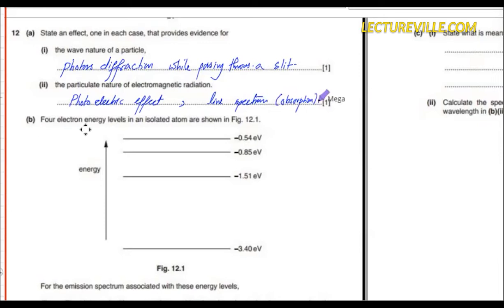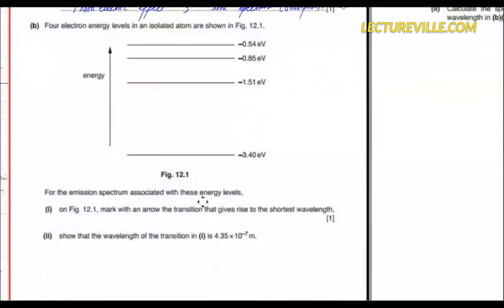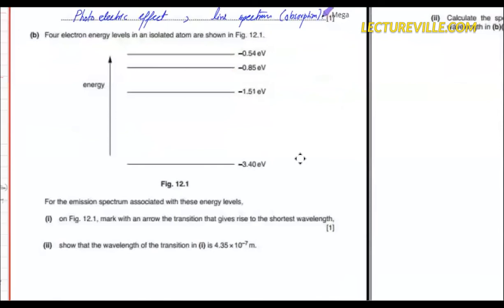Four electron energy levels in an isolated atom are shown. For the emission spectrum associated with these energy levels, mark on the figure an arrow showing the transition that gives rise to the shortest wavelength. Shortest wavelength corresponds to the largest energy transition, so this will be the largest energy.